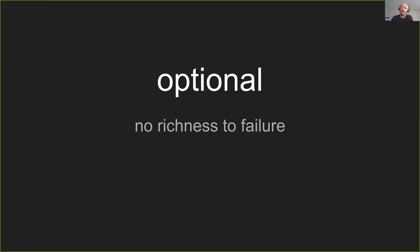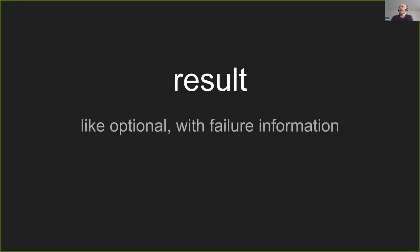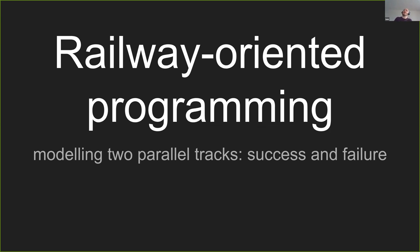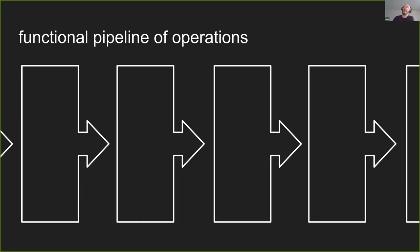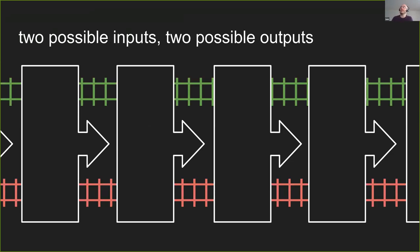The downside of optional is there's no richness to failure. Result is basically just the same as optional - two halves, either you've got something or you don't, but when you don't, you've got some information about the failure. Now we move on to railway-oriented programming and replace the carpet metaphor with the railway metaphor: modelling our code path as having two parallel tracks - success and failure. We've got our functional pipeline of operations, with two possible inputs and two possible outputs: the green path along the top for successes, the red path along the bottom for failures.